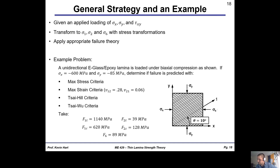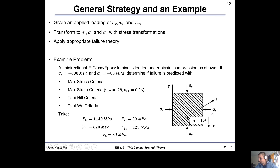Our stress in the x direction is negative 600 MPa, stress in the y direction is negative 85 MPa. We want to determine if failure is predicted with a variety of failure theories discussed in class. Note that our fiber direction is 10 degrees off of the actual xy coordinate system for this particular problem. Go ahead and copy this problem now if you want by pausing the video.